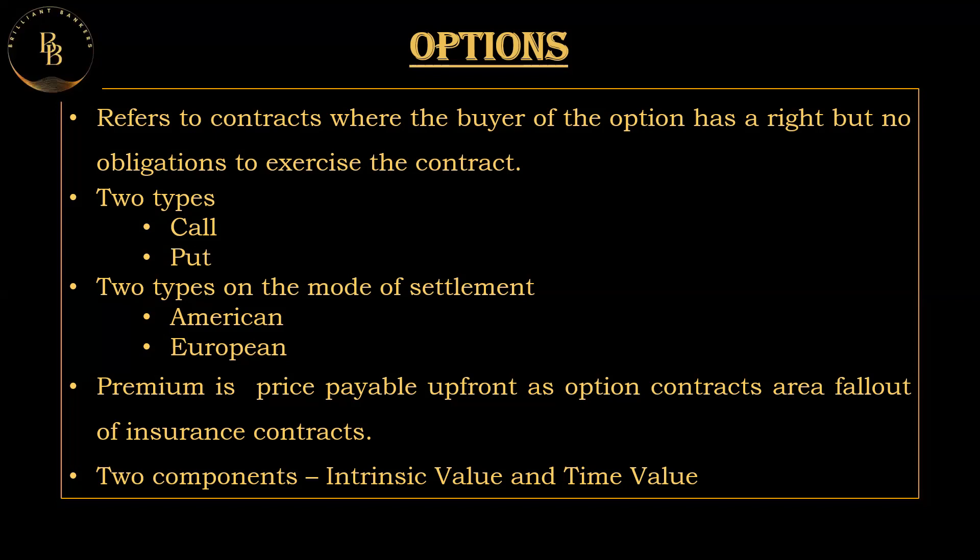In simple terms, options are like special agreements. When you buy an option, it's like getting a special agreement that gives you the right to buy or sell something — like stocks — at a specific price, but you don't have to if you don't want to. Buying a call option is like having a coupon that allows you to buy something at a fixed price; buying a put option is like having the right to sell something at a fixed price. Key terms used in options are ATM, ITM, and OTM.